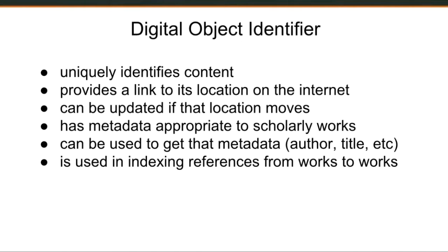We'll start with just an overview of Digital Object Identifiers, the service we're talking about today. A DOI allows us to uniquely identify content. Its history comes from the publishing area, where publishers needed to uniquely identify journal articles. It provides a link to the location — so it's not only an identifier but a URL as well, doing two things: giving a unique identifier that is also clickable.